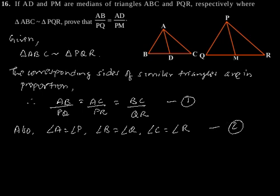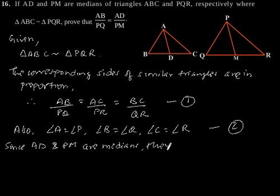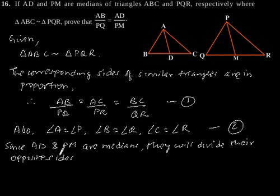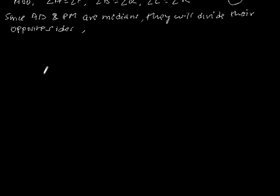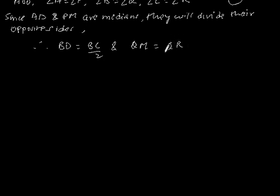Now since AD and PM are medians, they will divide their opposite sides. Therefore, BD is equal to BC by 2 and QM is equal to QR by 2. Let us say this is equation 3.